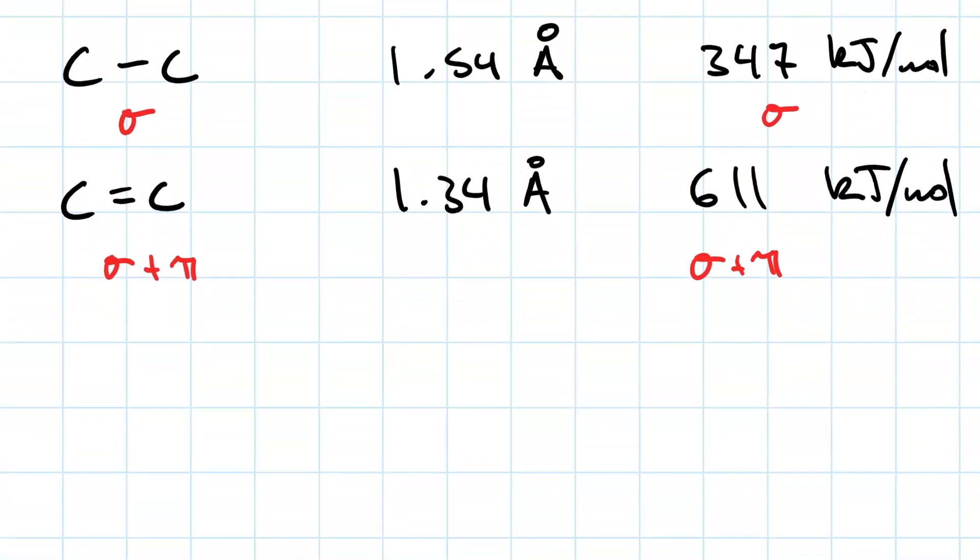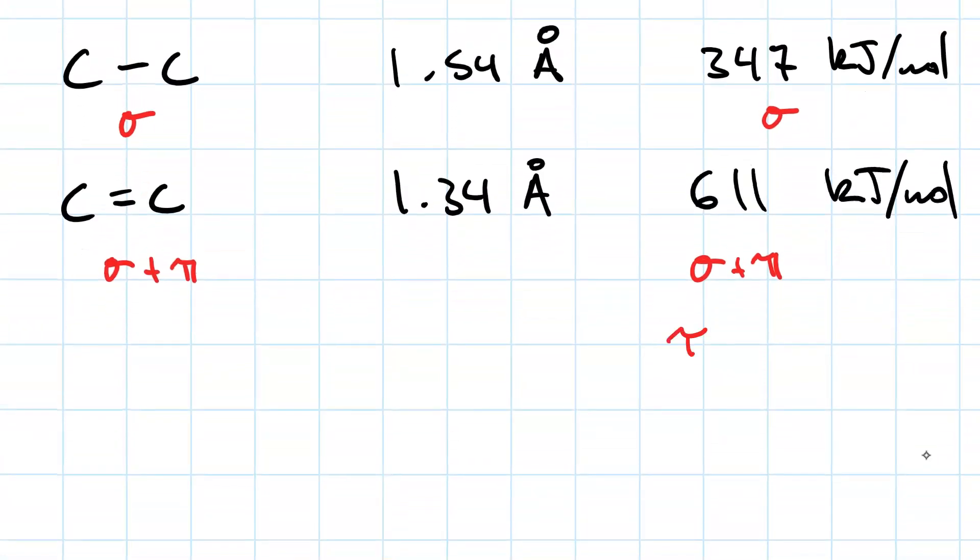That means the strength of a pi bond is 611 minus the sigma, or 611 minus 347. So that carbon-carbon pi bond is worth 264 kJ per mole.